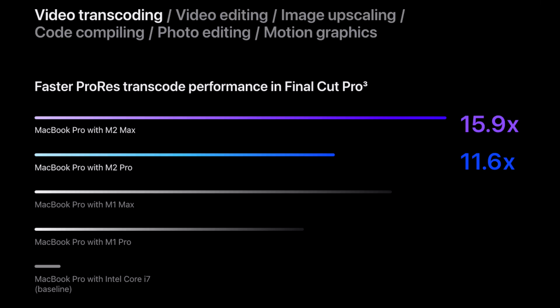On Apple's website, they have a graph showing faster ProRes transcoding performance in Final Cut Pro, and it shows the M2 Max at the top, with the M2 Pro actually slower than the M1 Max. So the Mac Mini will probably render video a little slower than the M1 Max in the Mac Studio. Apple doesn't show GPU core counts, so we'll have to wait for people to get M2 Pros in hand and run benchmarks to compare against the M1 Max.